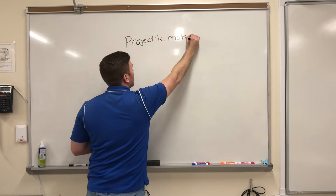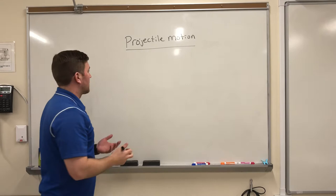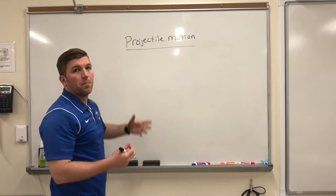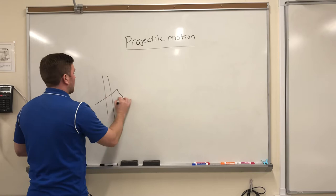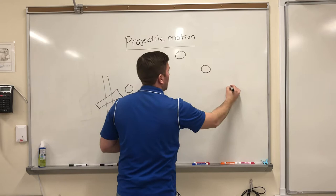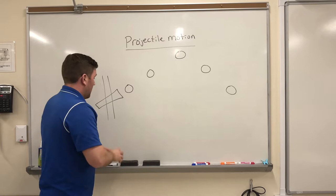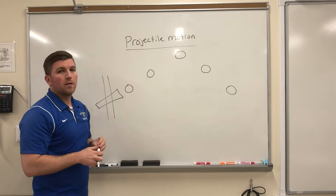Now projectile motion, as we've talked about before, is really talking about something that's moving at an angle through space and it has a vertical and horizontal component. So those vertical and horizontal components, if I had something like a cannonball flying through space, we have five different locations for that cannonball. Obviously it's moving in an arc like any projectile does.